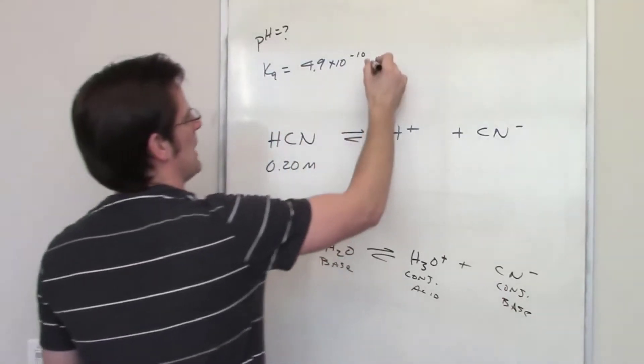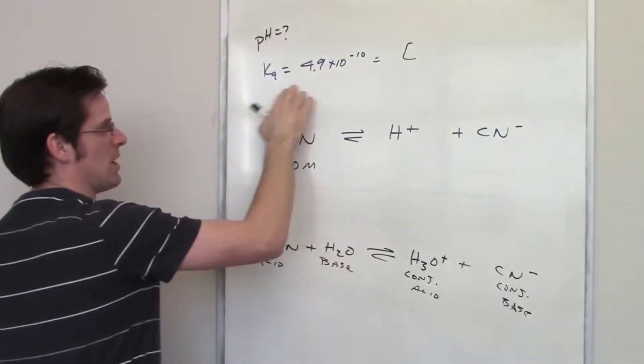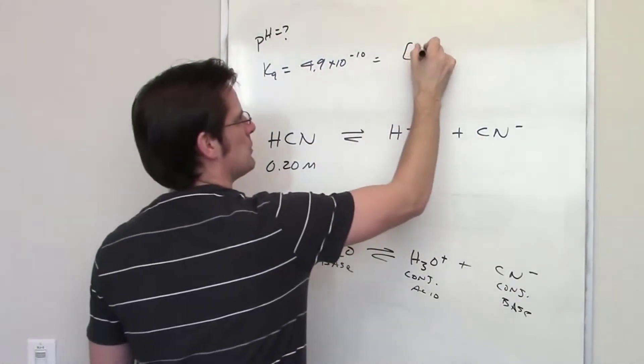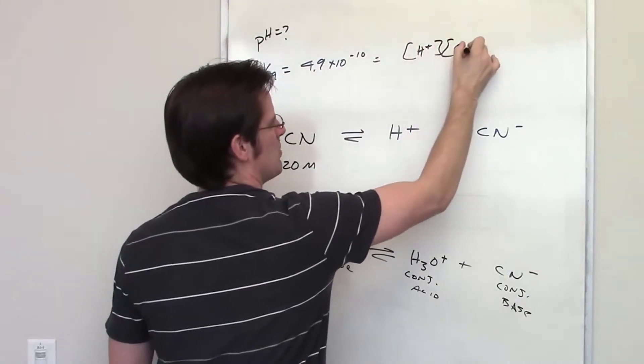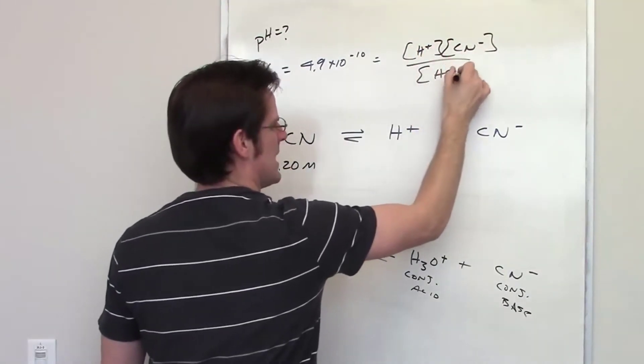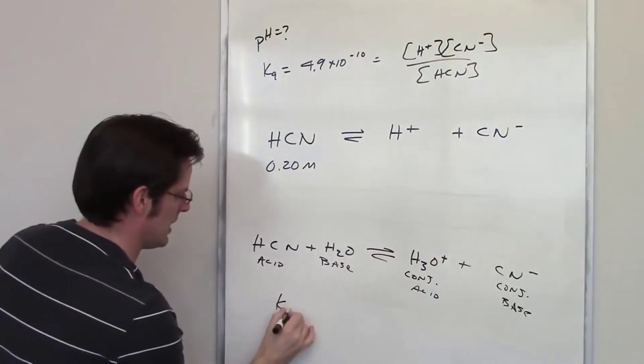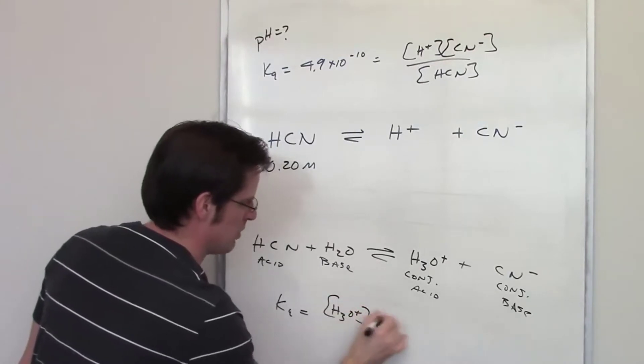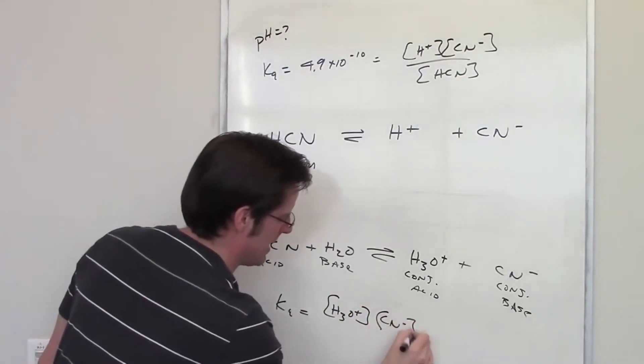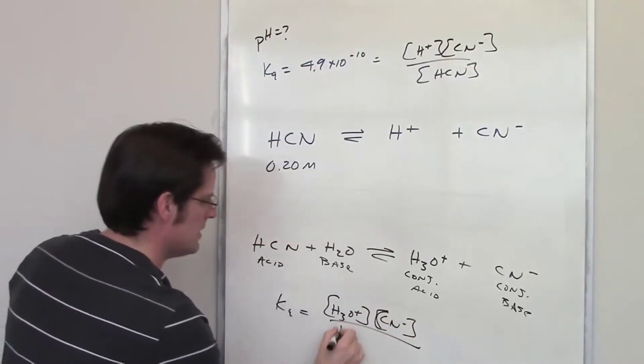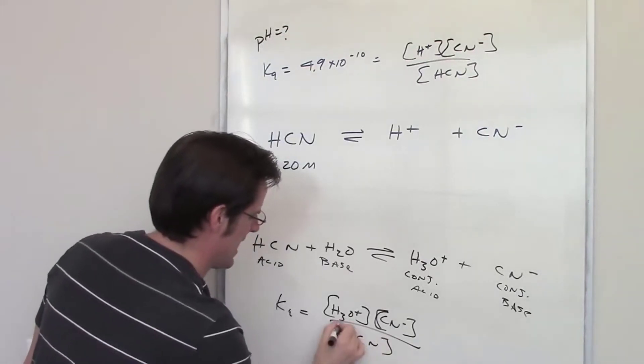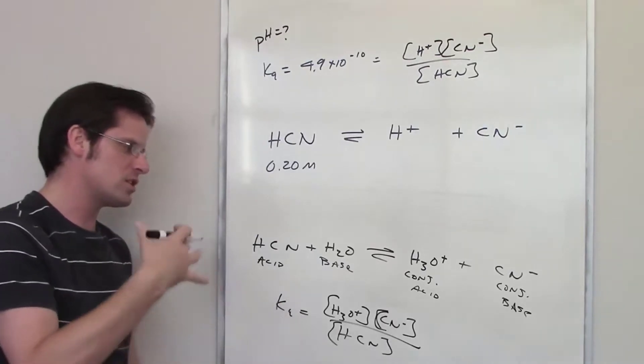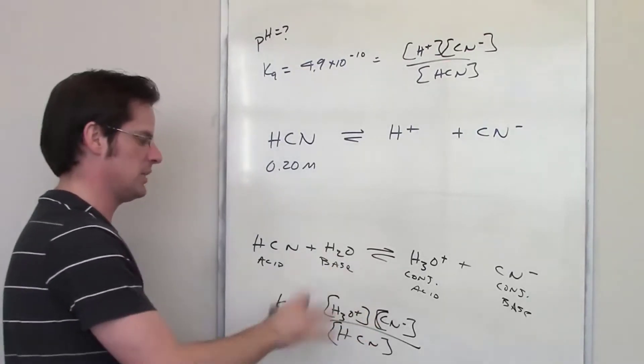So I look at my K expression, I'm talking about writing a K expression of this thing up here. It's going to be H plus concentration multiplied by CN minus divided by the concentration of HCN. The K expression of the thing down here is going to be H3O plus's concentration multiplied by the concentration of CN minus, I'm being kind of lazy with my brackets, divided by the concentration of HCN. H2O is omitted because it's a liquid. You don't include liquids or solids in equilibrium constant expressions. They're omitted.